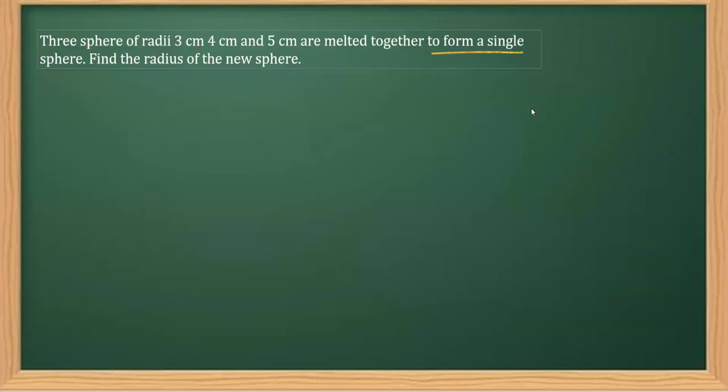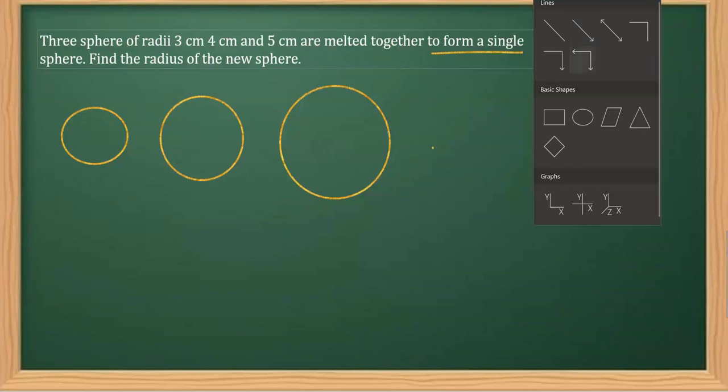So what we know: there are three spheres. Let's say this be the first sphere of radius 3 cm, the other being 4 cm, and the third whose radius is 5 cm. These spheres are melted to form a big sphere.